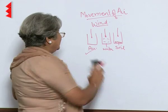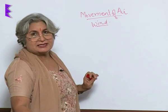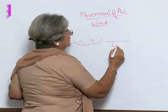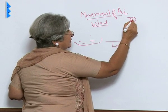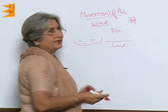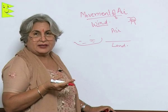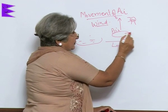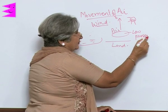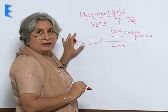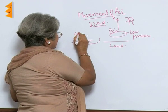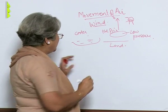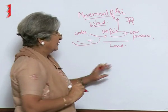And that's how winds are caused. What happens in cities which are on the sea coast? If this is sea and this is land — during the day, due to the sun, the air above land gets heated up. Once it is heated up, it moves up. When it moves up, there is low pressure. Now the air above the sea is cooler, because water does not get heated up so easily. So this cool air moves towards the low pressure area.